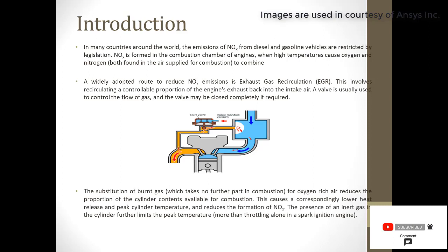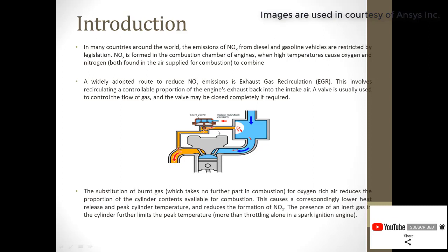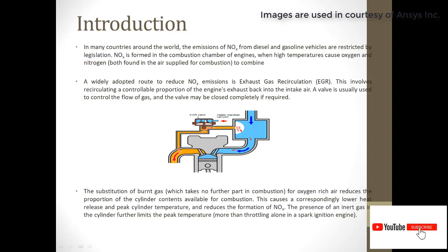EGR involves recirculating a controllable proportion of engine exhaust back into the intake air. The orange part shown is the exhaust gas — part of it is sent back to the inlet manifold so that the oxygen sent to the engine is reduced and combined with exhaust gas, reducing NOx formation. The heat exchanger is very important here because it reduces the exhaust gas temperature, which in turn reduces the engine temperature, positively impacting NOx production.